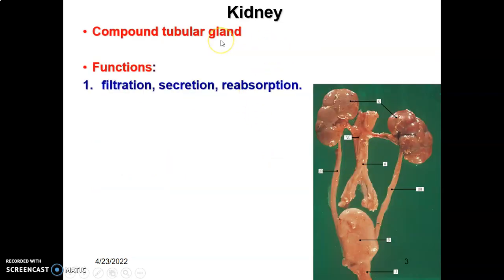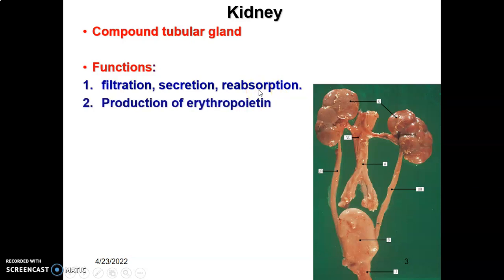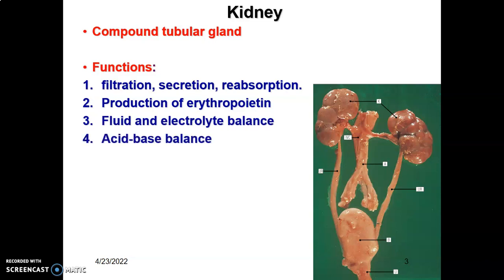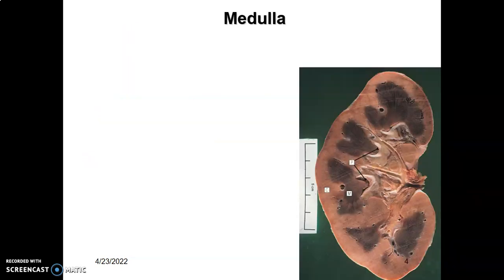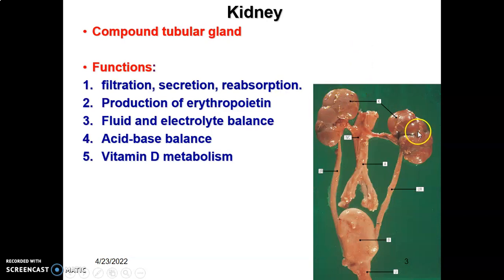The kidney is a compound tubular gland and it has the following functions: filtration of blood, secretion of ions, and reabsorption of some ions. It also helps in the production of erythropoietin, which helps in blood cell formation. It has a role in fluid and electrolyte balance, acid-base balance, and in the metabolism of vitamin D.